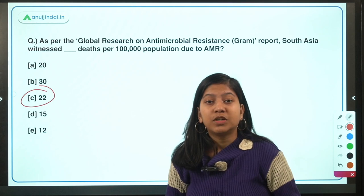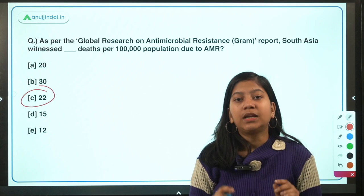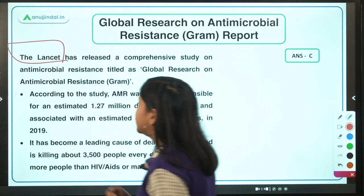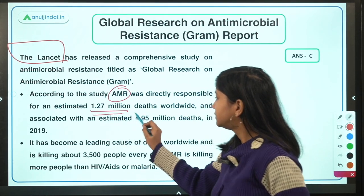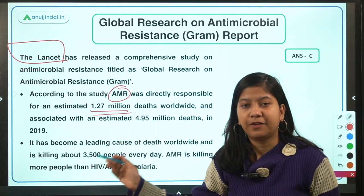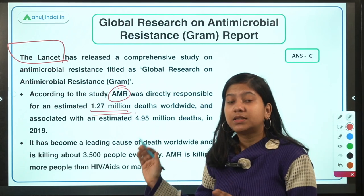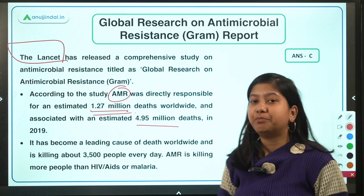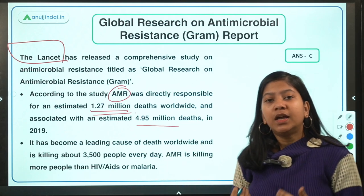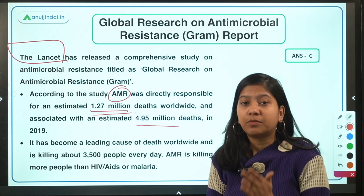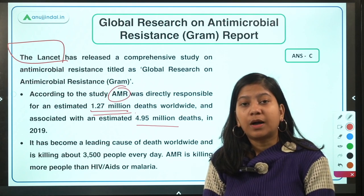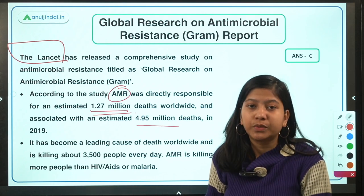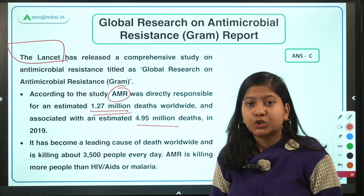Sub-Saharan Africa faced 24 deaths per 1 lakh population due to AMR. Do remember the journal The Lancet which published this report. An estimated 1.27 million deaths were recorded due to AMR in 2021, compared to 4.95 million deaths in 2019 — both very large numbers. AMR develops in the body because people take prescriptions incorrectly, not completing the full course of medicine, which makes bacteria inside the body resistant to that medicine.